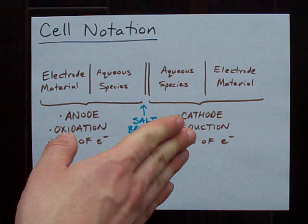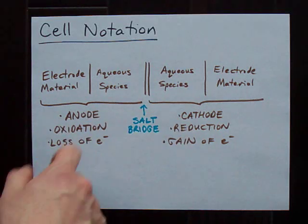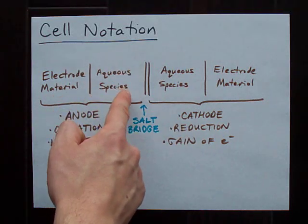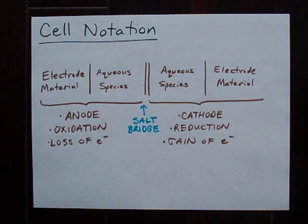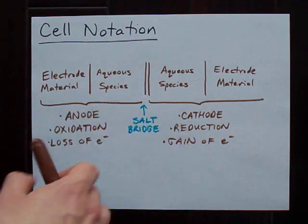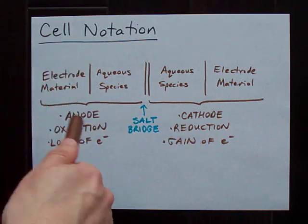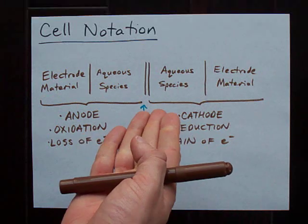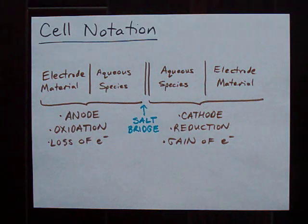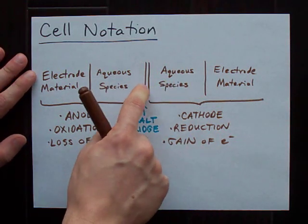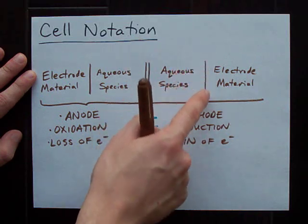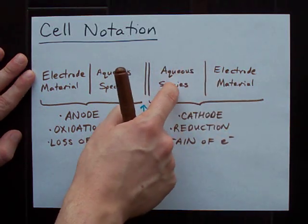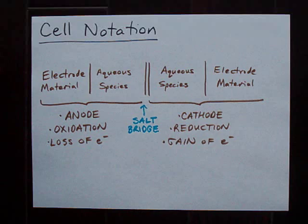If, for some reason, you have a gas as well, you're going to need another single bar over here, and then you'll tell people what gases you have. But every time you have a different phase - solid, liquid, aqueous, gas - you're going to need to separate them with a single bar. It's just a notation. Same thing on the other side. You're going to have your aqueous species written close to the double bar, and you're going to separate all your phases, i.e. your solid electrode from your aqueous species, with single bars.